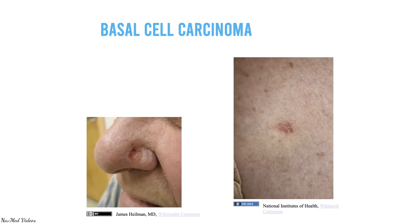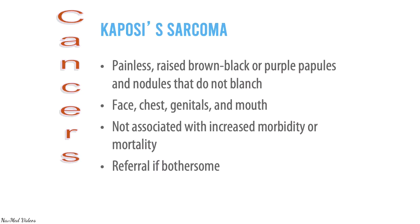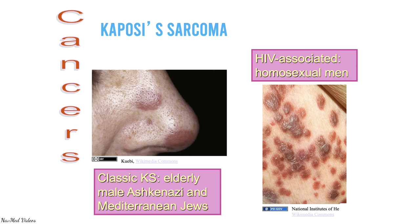Here are more examples of basal cell carcinoma. Kaposi's sarcoma is a painless raised brown-black or purple papule or nodule that does not blanch. It can occur on the face, chest, genitals, and mouth. It's not associated with increased morbidity or mortality, and you should refer to the dermatologist if it's bothersome. It can be classic Kaposi's sarcoma — seen in elderly Ashkenazi Jewish males — or HIV-associated, usually in homosexual men.